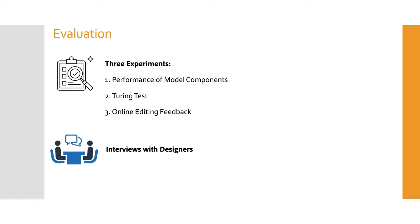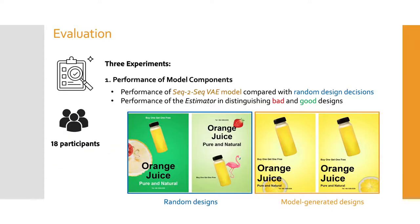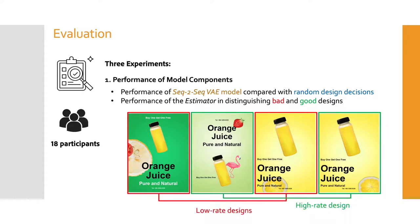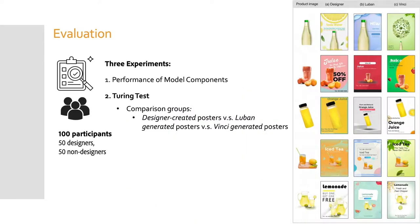To evaluate the performance of Vinci, we conducted three user experiments and an interview with designers to collect subjective feedback. In our first experiment, we asked participants to compare designs generated randomly with those generated by our model. We found that participants have a significant preference for model-generated designs — in particular, they liked the consistent color scheme and design context between the selected elements and the product image. We also found participants generally agree with the estimator's judgment and prefer high-rated designs because they see fewer element overlaps.